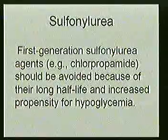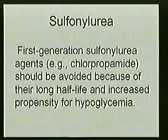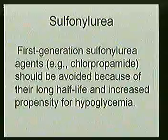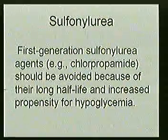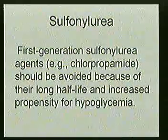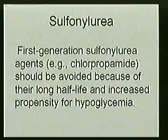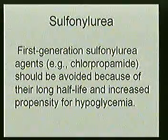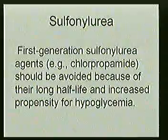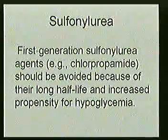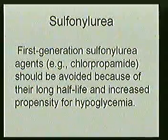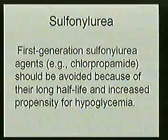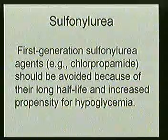Regarding sulfonylureas, first-generation agents like chlorpropamide should be avoided because of their long half-life, which increases the propensity for hypoglycemia. Thiazolidinediones, such as rosiglitazone and pioglitazone, are usually not indicated in patients with evidence of heart failure or liver disease. In elderly patients without heart failure or liver failure, these drugs could be a very good option for monotherapy.